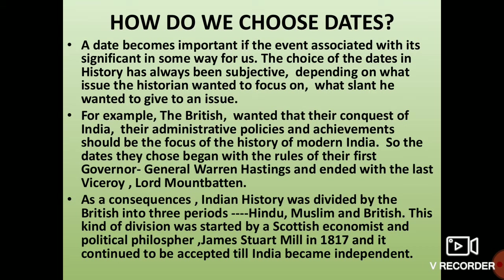Indian history was divided into three periods — Hindu, Muslim, and British. This division was done by a Scottish economist and political philosopher, James Stuart Mill, in 1817. He was the one who divided Indian history into these three periods. This continued to be accepted — Hindu, Muslim, and British — till India became independent.